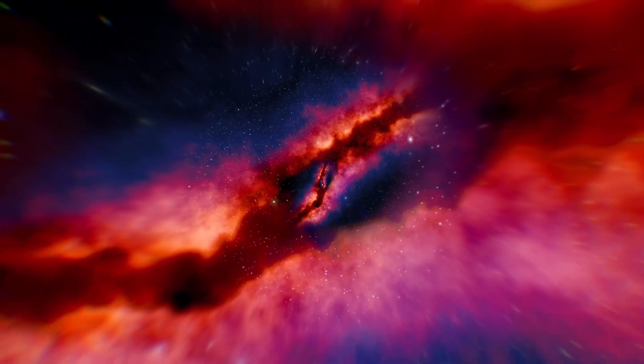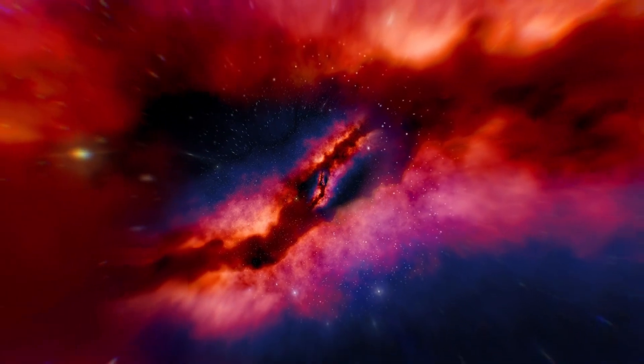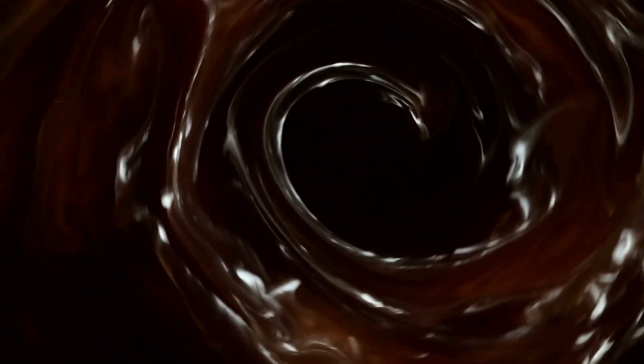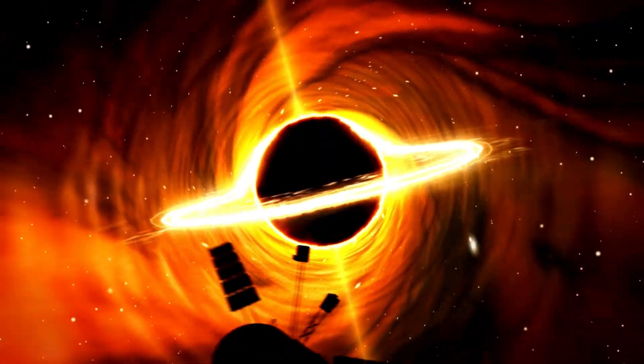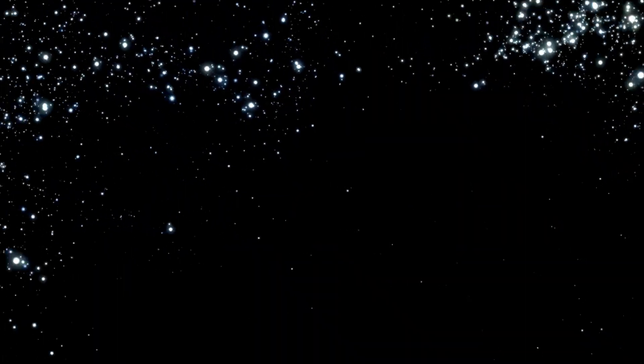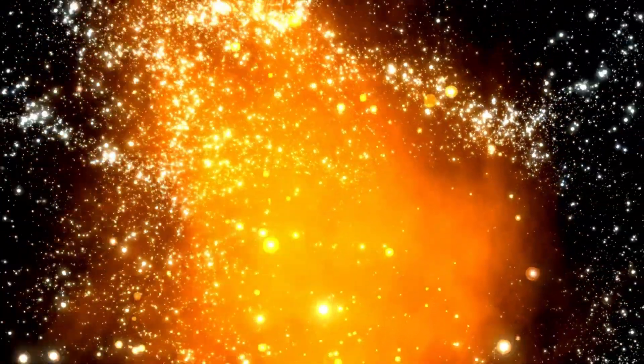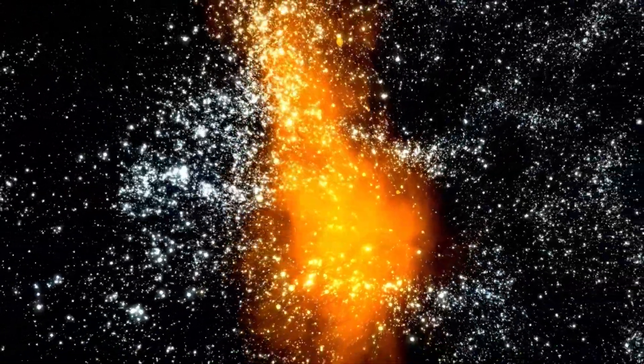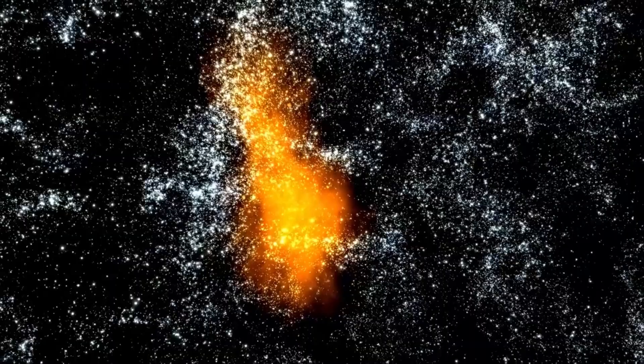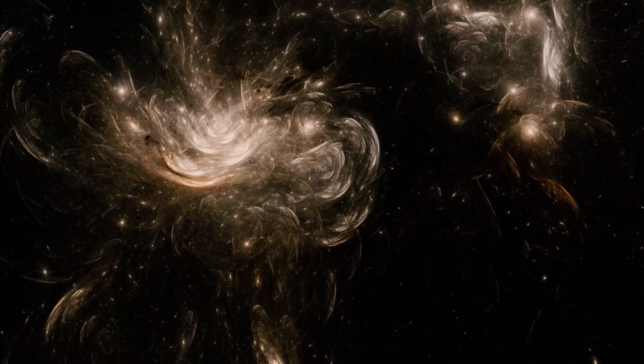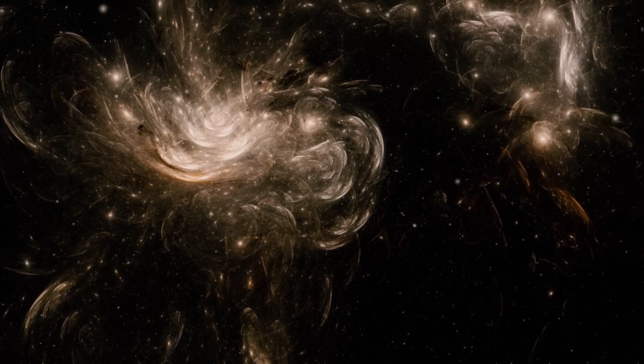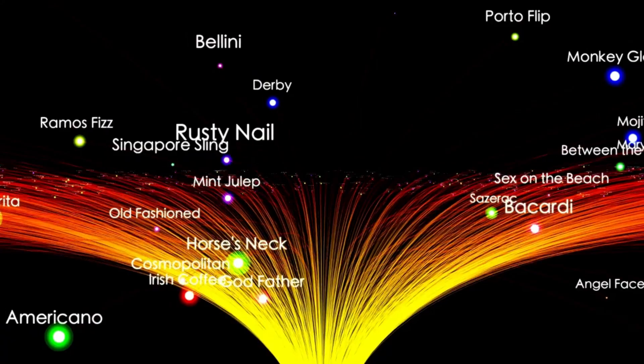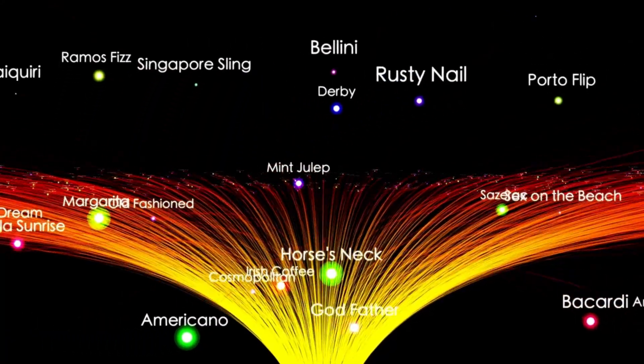One theory is that the early universe was like an all-you-can-eat buffet for black holes. Picture this, right after the Big Bang, the universe was dense with gas clouds. These clouds could collapse under their own gravity, forming stars and black holes at a breakneck pace. Maybe some of these black holes got a head start, growing massive in just a few hundred million years because there was so much raw material to feast on. Another idea? These early black holes didn't grow slow and steady like we thought. Maybe they went through wild growth spurts, merging with other black holes or swallowing entire star clusters in chaotic cosmic pileups. Whatever happened, it's clear the early universe was a far crazier place than we imagined.